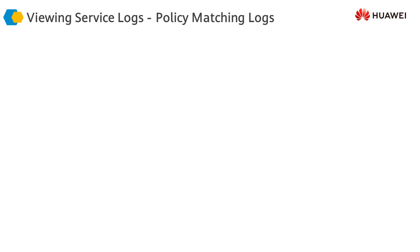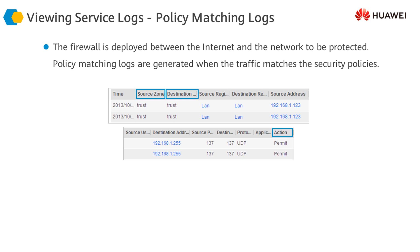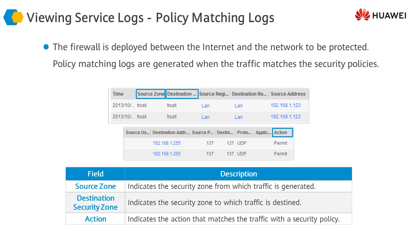Policy matching logs are another type of service log. Since the firewall is deployed between untrusted networks like the internet and the networks to be protected, security policies are defined on it. Traffic passing through the firewall must match a set of configured policies, and a deny or permit decision is taken accordingly. Policy matching logs are generated when traffic matches configured security policies. By viewing these logs, administrators can determine whether security policies are configured correctly and meeting requirements. These logs can also be used to locate faults during troubleshooting. The security zone field indicates the zone from which traffic is generated, destination zone indicates where traffic is destined, and action represents the configured response.